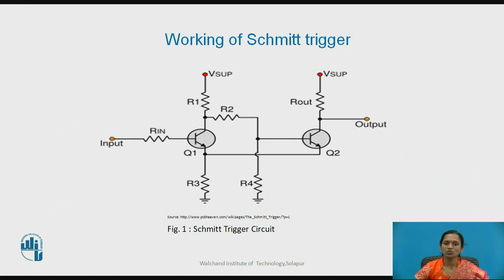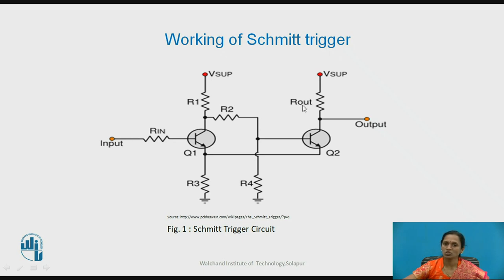Figure 1 shows the circuit diagram for the Schmitt trigger using a transistor. The emitter terminals of Q1 and Q2 are short-circuited, and R3 is the emitter bypass resistor. Resistors R1, R2, and R4 form the voltage divider circuit which controls the biasing or input voltage at the base of transistor Q2. Supply voltage is applied to R1 and Rout, and Rout can be selected based on the desired output voltage level. A base resistor Rin can also be used at the base of transistor Q1.